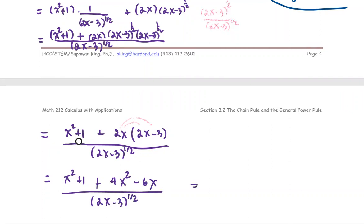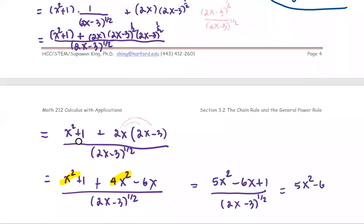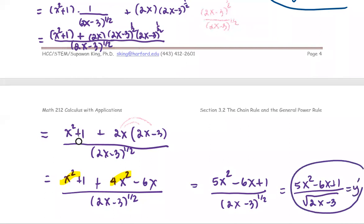Combining like terms: x squared and 4x squared give 5x squared, plus one minus 6x. Writing in order of powers: 5x squared minus 6x plus one, all divided by (2x minus 3)^(1/2), or equivalently over the square root of 2x minus 3. This is the derivative y prime.